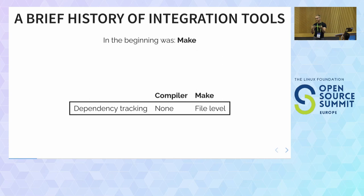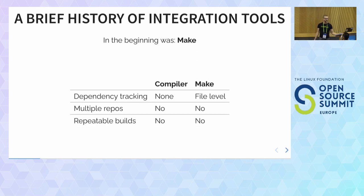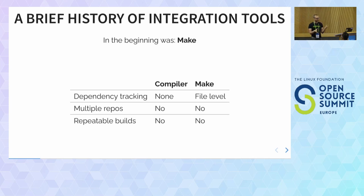Make solves the problem of tracking dependencies between files, but it doesn't solve every problem related to integrating software. Maybe you've got different teams working in different places — Make doesn't solve that. And maybe you built something on one computer and it worked fine, but on a different computer the compiler version is different and now it doesn't work. Make doesn't solve that either.